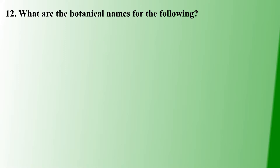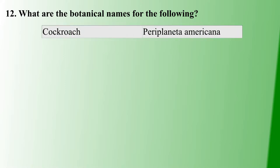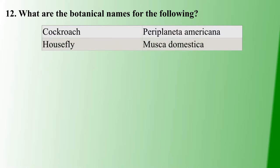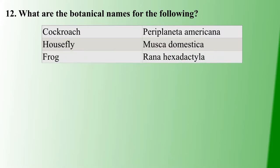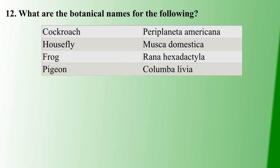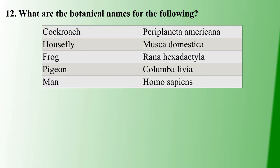Here are some botanical names of animals: Cockroach is Periplaneta americana. Housefly is Musca domestica. Frog is Rana hexadactyla. Pigeon is Columba livia. Man is Homo sapiens.